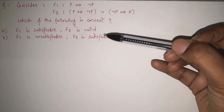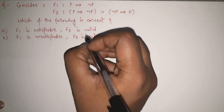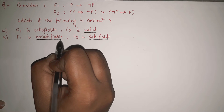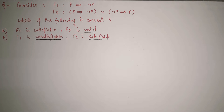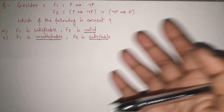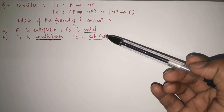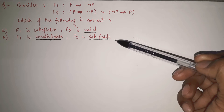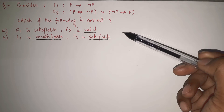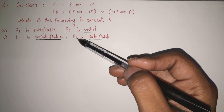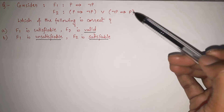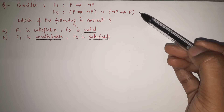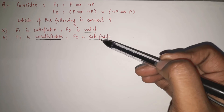In order to solve this question, the first thing you should know is what is valid, what is satisfiable, and what is unsatisfiable. Unless we know this, we can't solve this example. What is satisfiable? For any such value, if any value exists for which the formula is true, we can say that it is satisfiable. That means when we say F2 is satisfiable, it means there exists any such value for which there is a possibility that it is true. If there is a possibility of being true, then we can say that F2 is satisfiable.